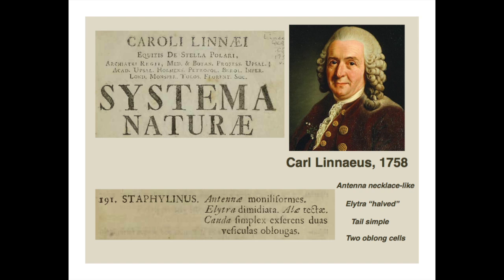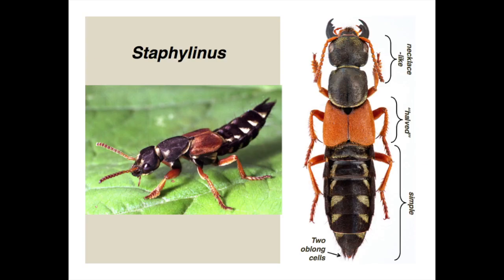If you've never seen Staphylinus and you come along and see a description like 'antennae necklace-like, elytra halved, tail simple with two oblong cells,' it's kind of hard to imagine what it looks like. Staphylinus is a really incredible insect — absolutely beautiful, with all of this intricate morphology that Linnaeus' description could never really convey. Yes, it's got necklace-like antennae, but so do many other insects, and calling its abdomen 'simple' is subjective.